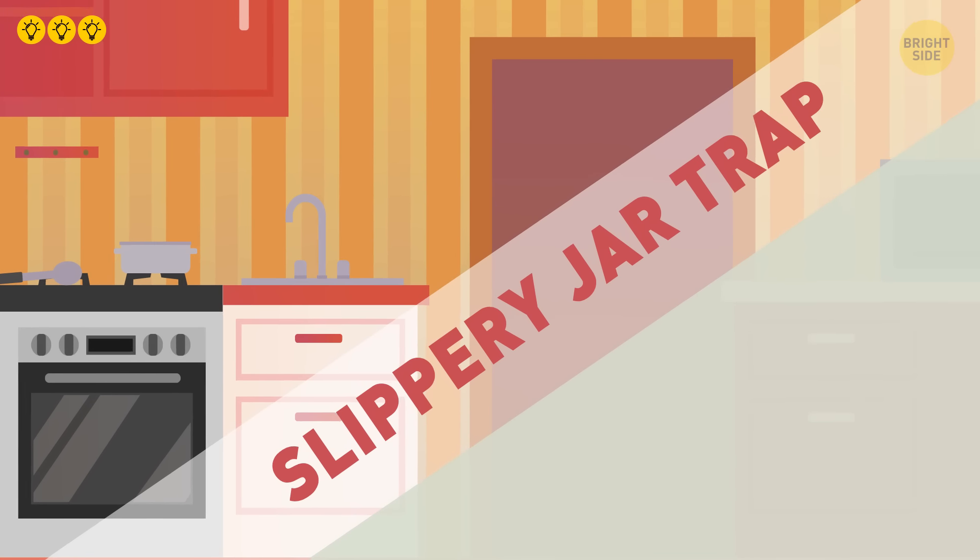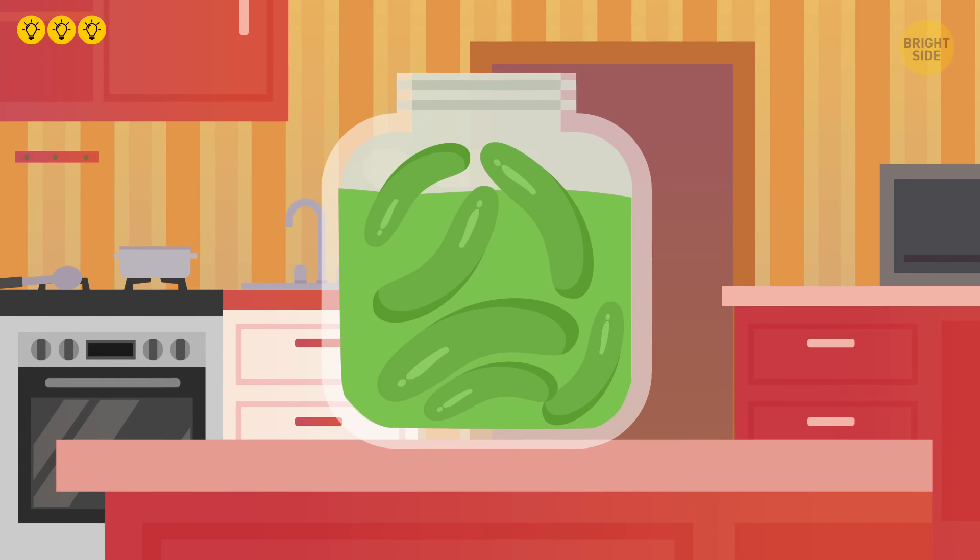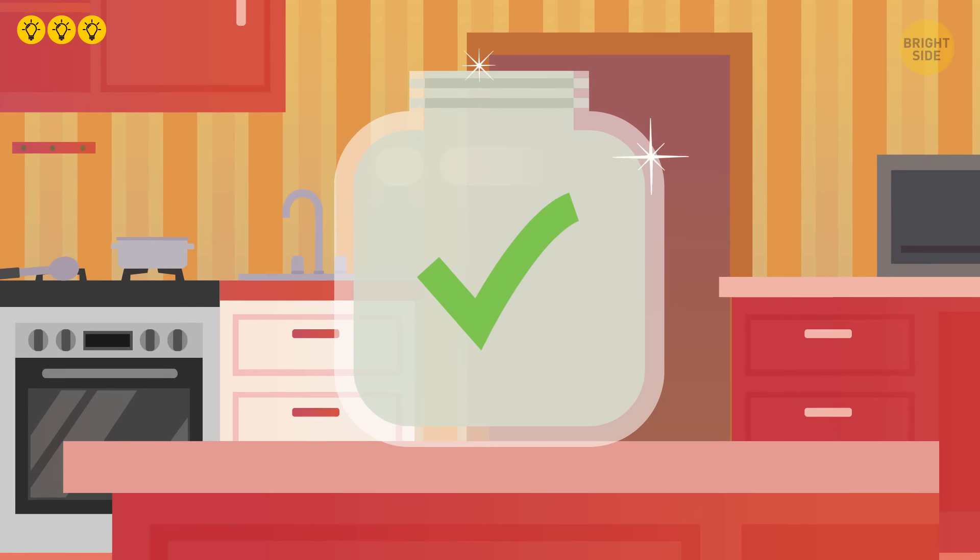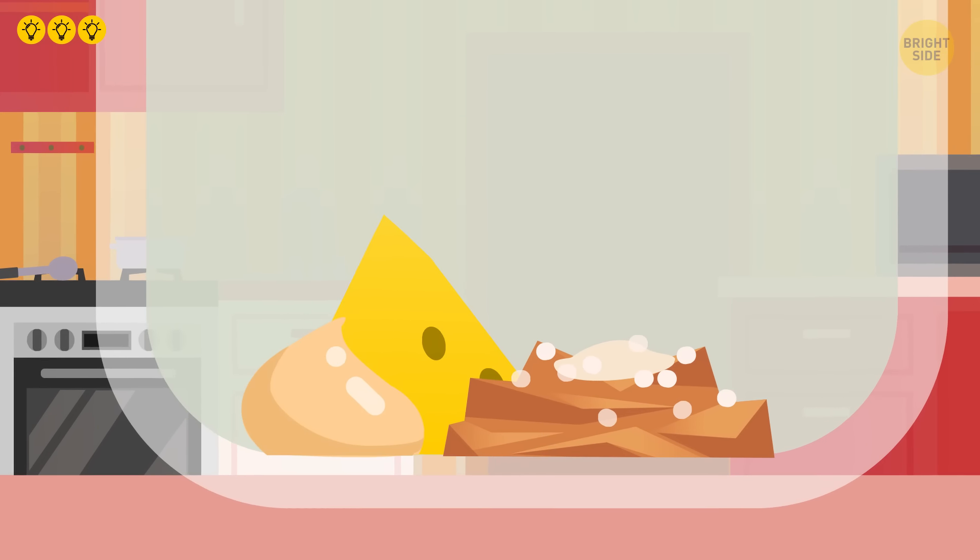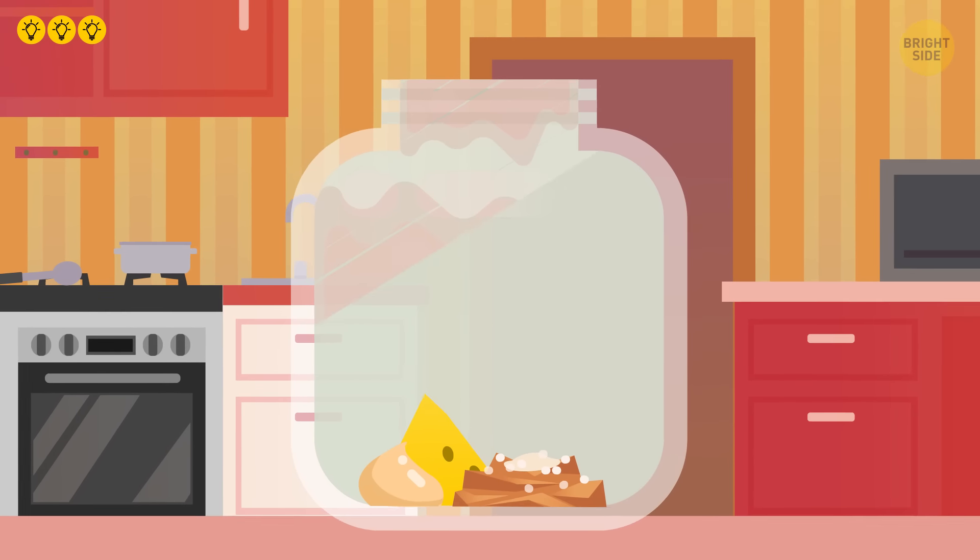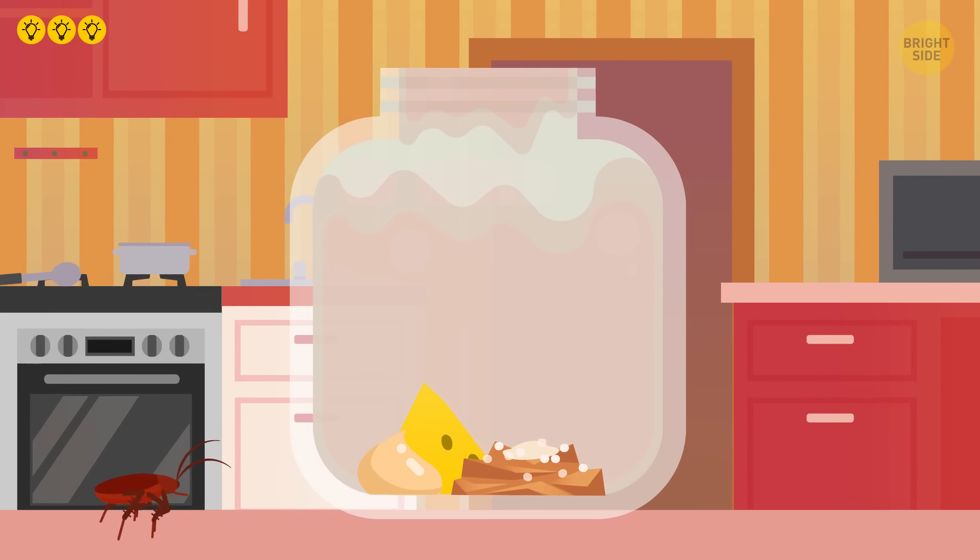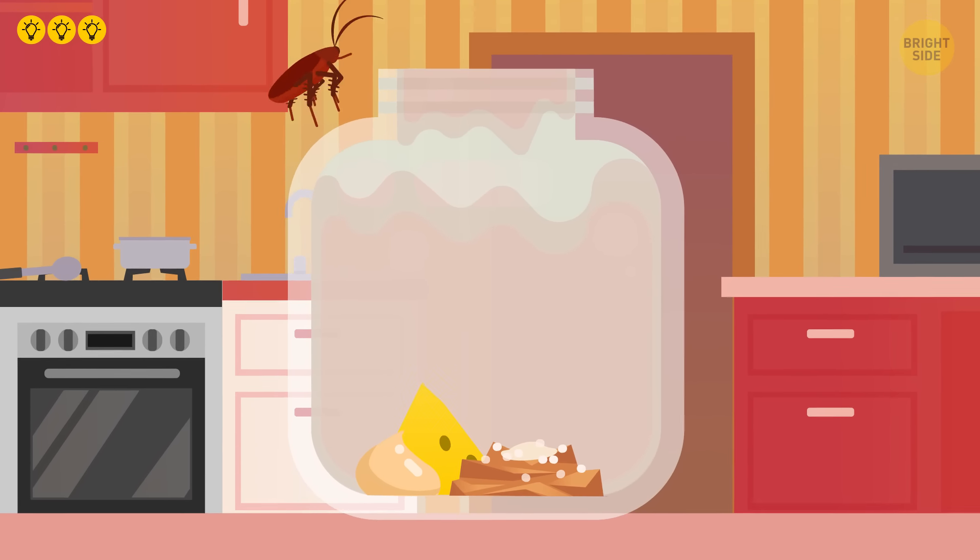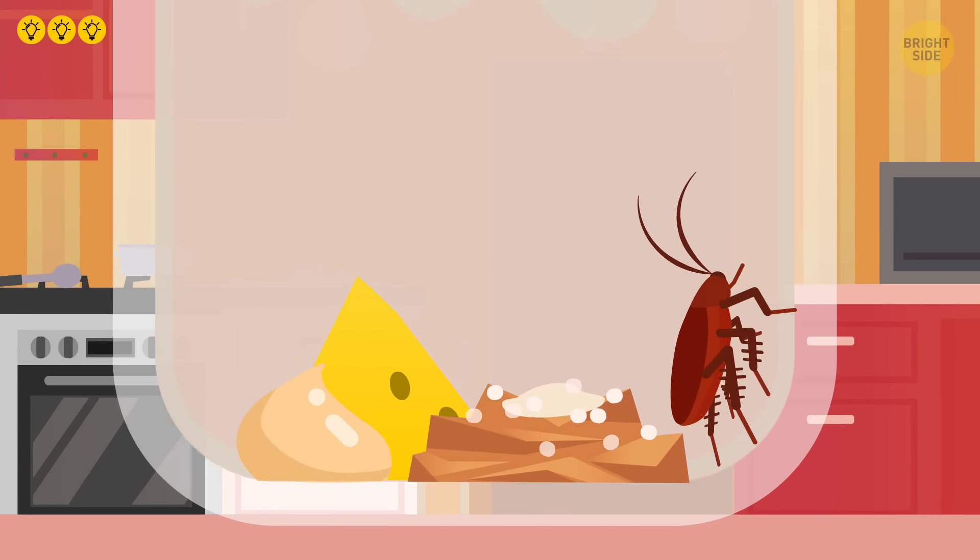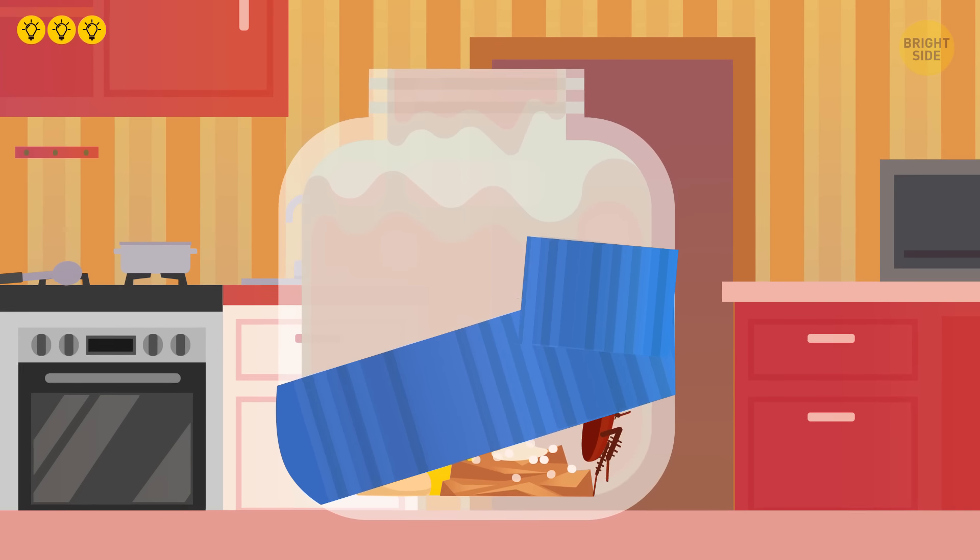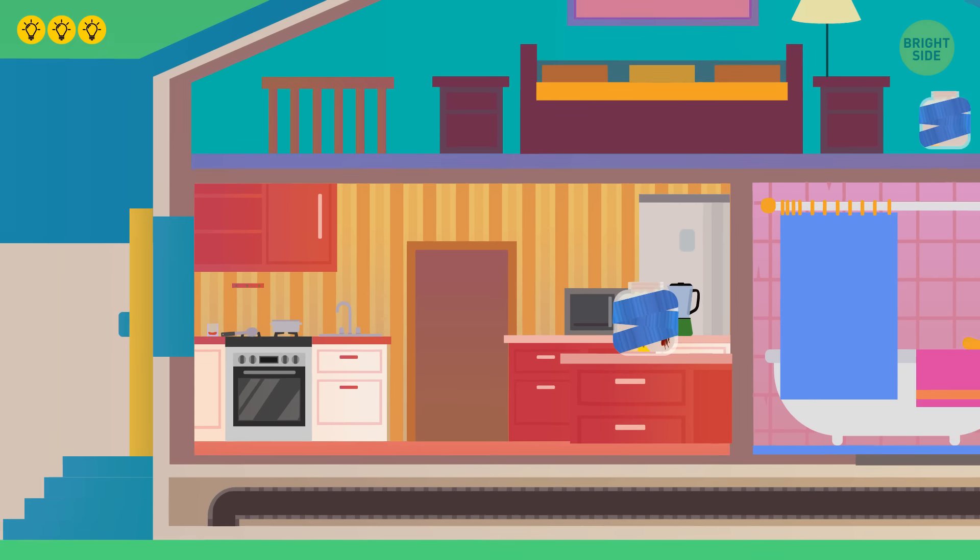Slippery jar trap. Grab an empty pickle jar or one of similar size and make sure it is completely clean and dry. Put some bait in the bottom, like a hunk of cheese, sugary peanut butter, or even some pan grease. Spread some petroleum jelly all over the inside of the jar, especially around the inside of the mouth. The cockroaches will climb in to go after the bait, but they won't be able to climb back up the slippery surface to escape. You can even make it easier for them to get into by covering the outside of your jar with painter's tape. Feel free to make several of these traps and place them throughout your house.